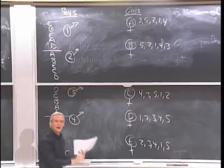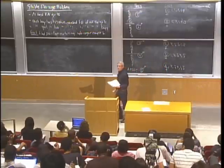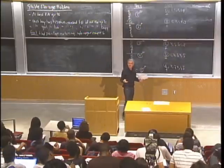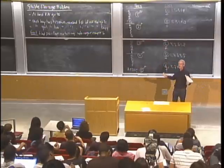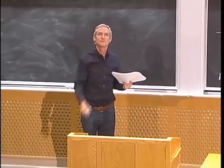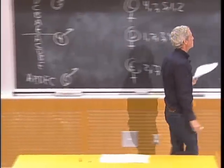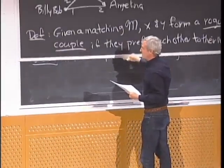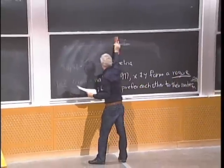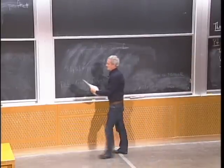Let's try the greedy algorithm: give each boy his best choice available. Boy 1 gets first choice, girl C. Boy 2 gets A. Boy 3 gets D. Boy 4 has to go all the way down to B because A, C, and D were taken. Boy 5 gets E — fourth choice. Maybe that's a stable matching. Boy 1 got first choice, so he's not going anywhere. Same for boys 2 and 3.